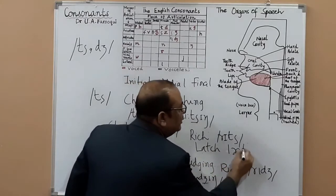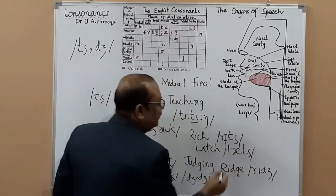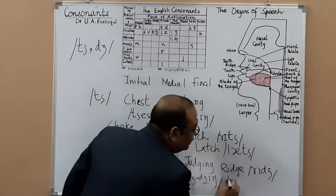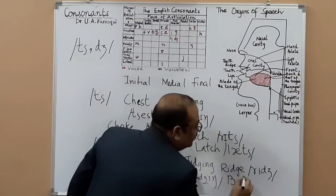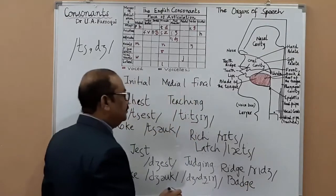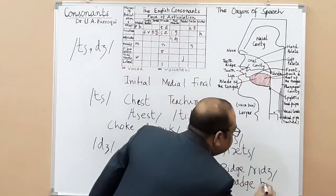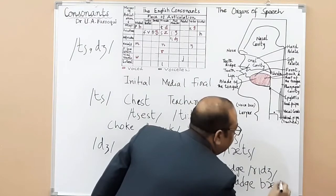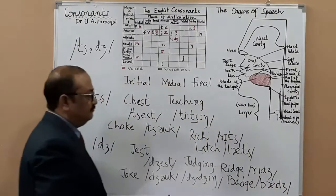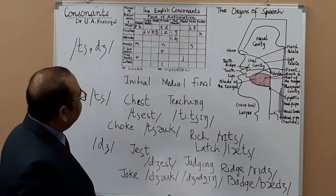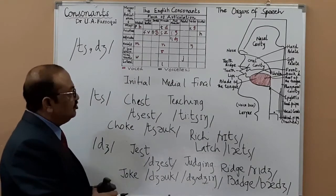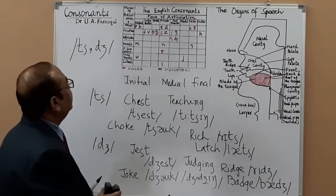This is how you do it: 'latch'. And here you may have 'badge' for the J sound finally. Have we written all three positions for the CH and J sounds? Yes — affricate, we have just one pair here.